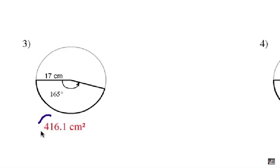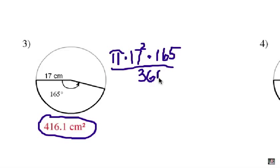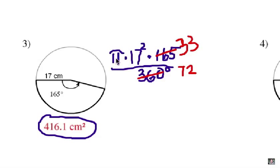Number three, we get 416.1 square centimeters, and here's how we get that. We're going to take the area of the circle, which is pi times r squared — so 17 squared — and multiply it by the central angle of 165, then divide by 360. Let's factor out 5 from the top and bottom, leaving 33 and 72. On the calculator: 3.14 times 17 times 17 times 33, then divide by 72. Hopefully you got 416.1.